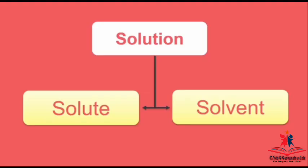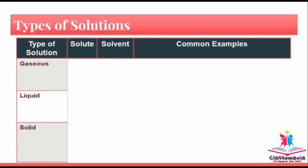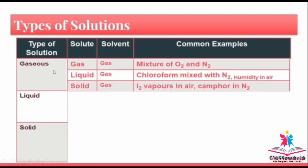Next are the types of solution. Solutions can be gaseous, liquid, or solid. In gaseous solutions, the solvent is a gas. If solute is gas in gas — for example, mixture of oxygen and nitrogen. Next is liquid in gas — for example, chloroform mixed with nitrogen, and humidity in air. Next is solid in gas — for example, iodine vapor in air or camphor in nitrogen.